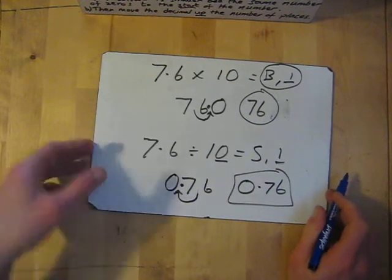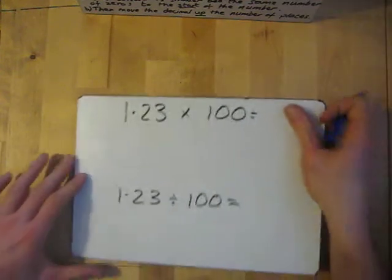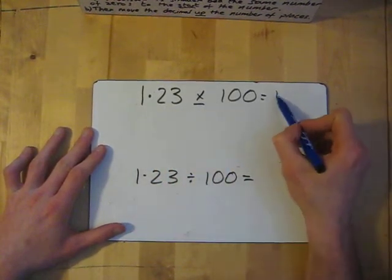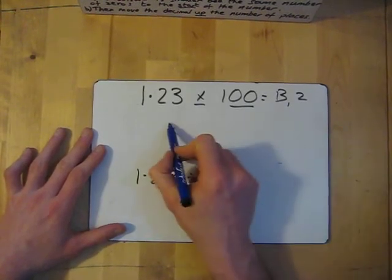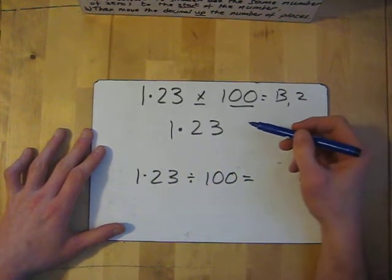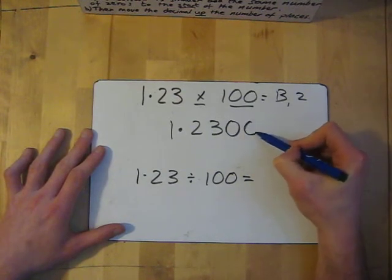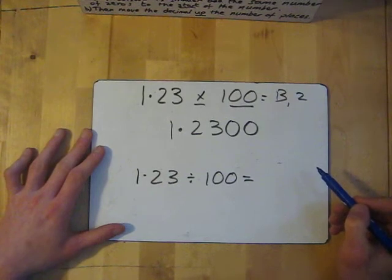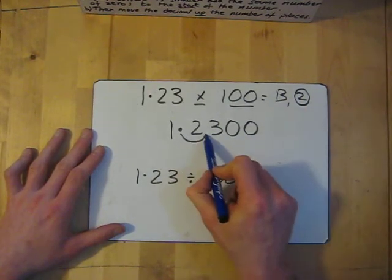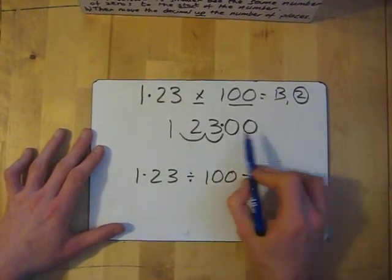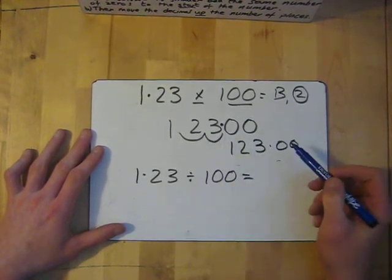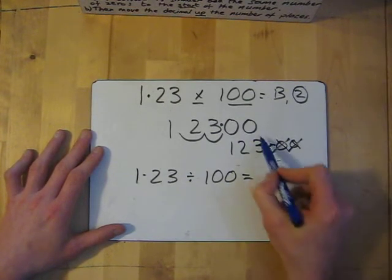That's all that is. Let's try a couple more. 1.23 times 100. Follow the rules — bigger or smaller: bigger. How many places: it's got 2, so bigger by 2 places. Write my number, 1.23. If the answer is bigger, add the same number of zeros to the end of the number — so two zeros here, just in case. Then move the decimal down two places: 1, 2. It moves to give 123.00. We don't need the two zeros, so the answer is just 123.